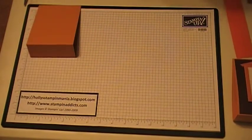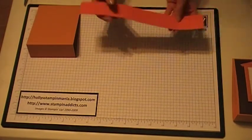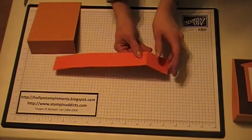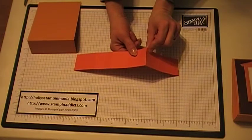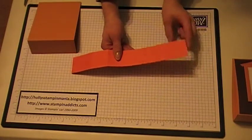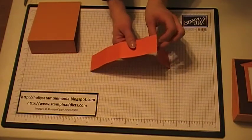Then what you want to do next is take your ten by one and a half piece and going from this end you want to score it at two inches and then score it at three and a half inches. I'm going to flip it around and do the same thing on the other side. Go to two inches and then three and a half inches.